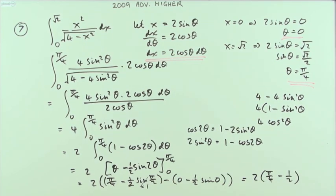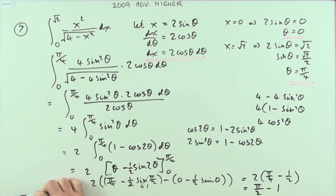Doubling that up gives a final answer of π/2 minus one.